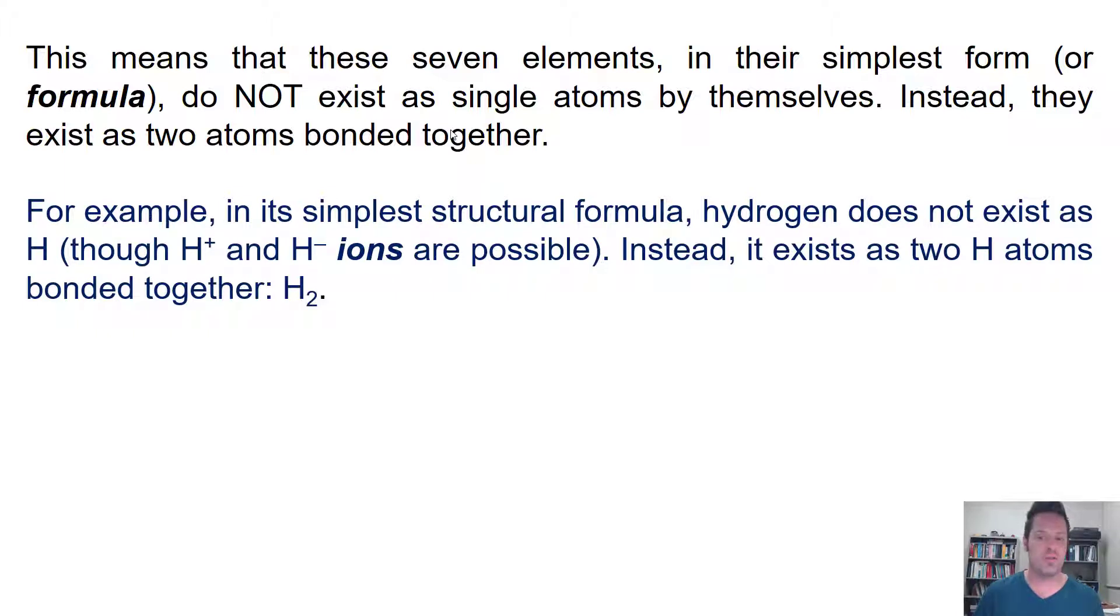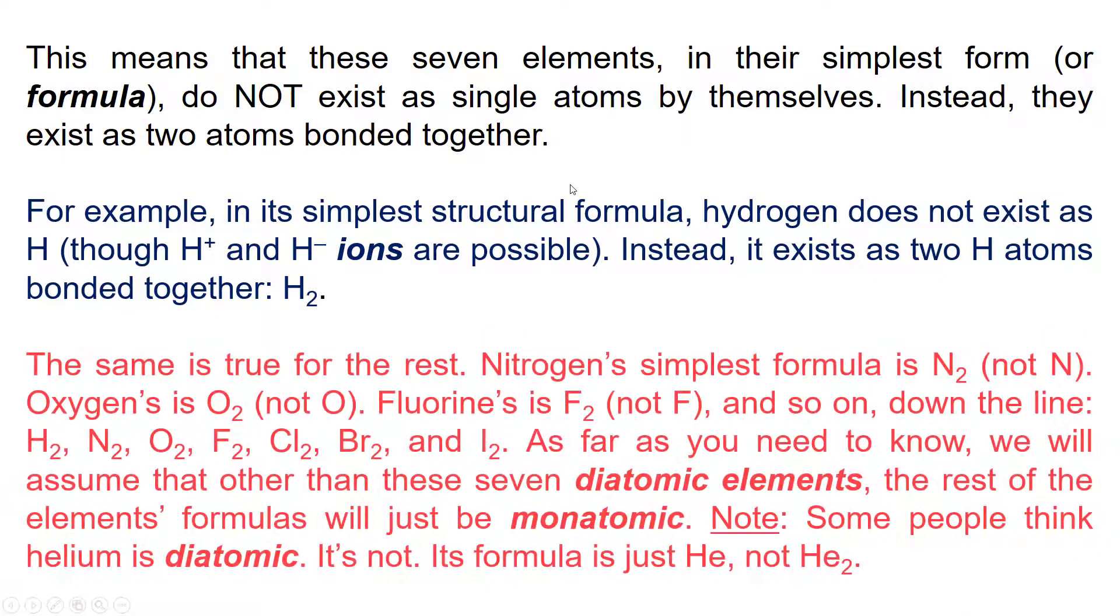in its simplest structural formula, hydrogen does not exist as H. There's no neutral H floating around anywhere. Though H plus and H minus ions do exist and are possible. Instead, hydrogen in its simplest form that's neutral, uncharged, exists as two H atoms bonded together. In other words, its formula is H2.